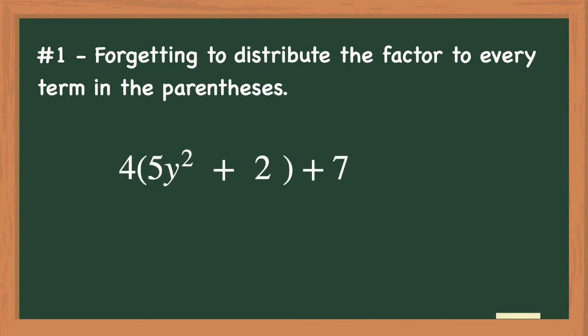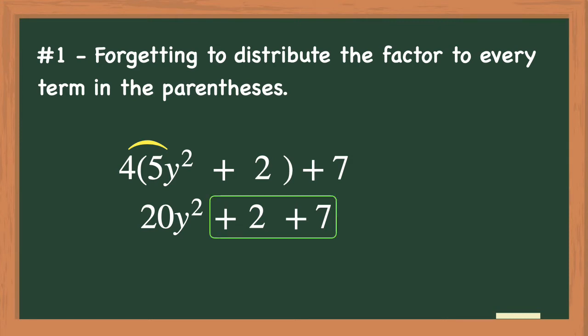Mistake number one: forgetting to distribute the factor to every term in the parentheses. For example, let's look at the expression of 4 times the quantity of 5y squared plus 2, being added to 7. One mistake that students make is to only distribute the factor of 4 to the 5y squared to get 20y squared, and then just bringing down the next two terms in the expression. By doing this, the next step would be to combine the like terms of positive 2 and positive 7 to get positive 9. Then when you bring down the 20y squared, you have the expression 20y squared plus 9, which is not correct.